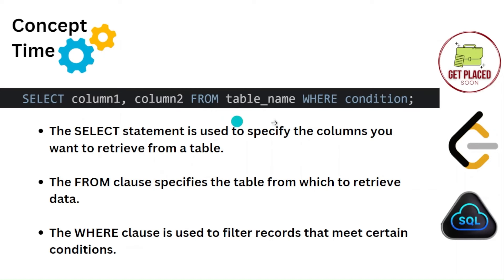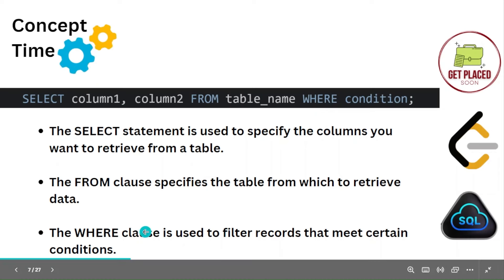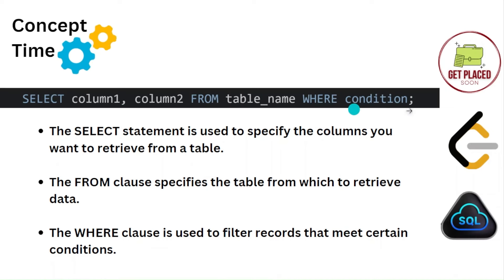Now let's learn about the WHERE condition. From the table, two columns are retrieved, but it may be a huge dataset and we want to filter the records — we want only some specific data from the entire data. To do that, we have the WHERE clause. The WHERE clause is used to filter records that meet a certain condition. You write the WHERE keyword, then specify the condition, and end the SQL statement with a semicolon. If the condition satisfies, that particular row is displayed; if not, those rows are not retrieved.